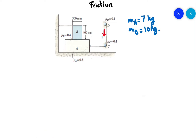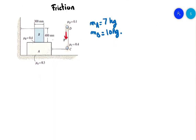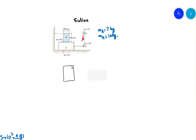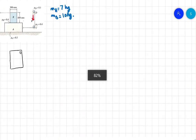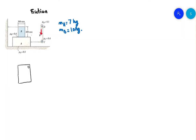Let's try to do all the free body diagrams just below the images. So we have block B — don't make your body diagram too small because it will be very hard to see. Then we have block A, a little bit longer, and the pulley C and the pulley D.